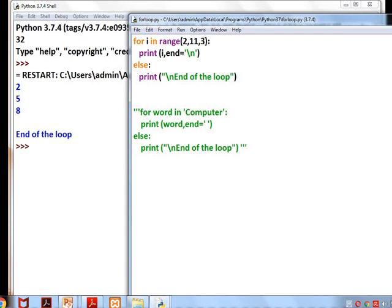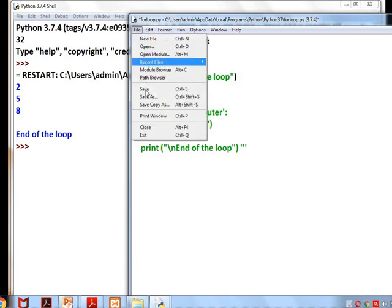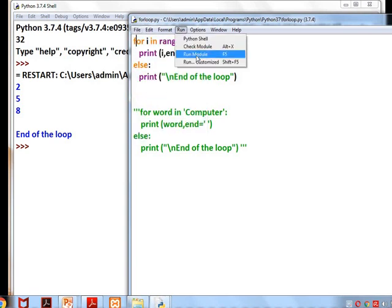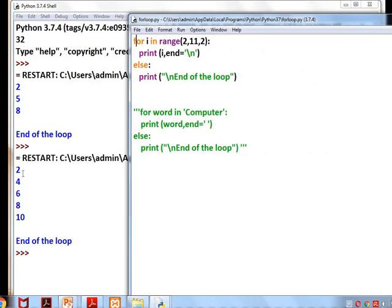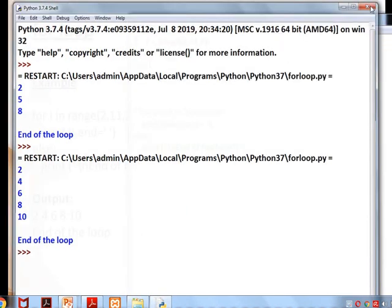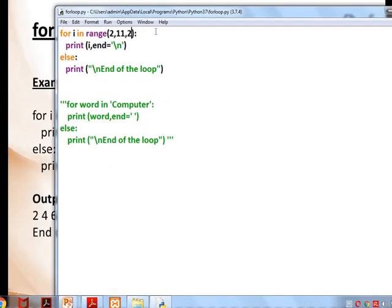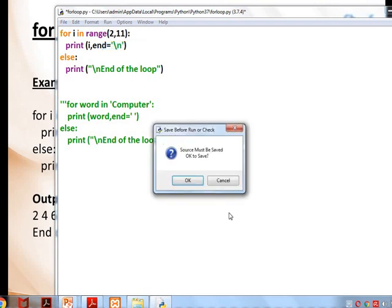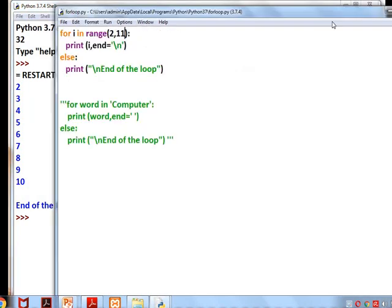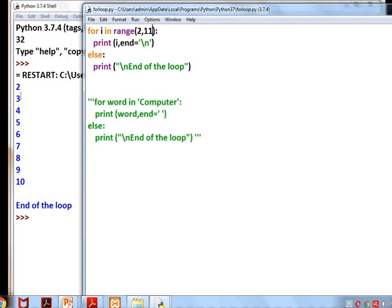So we'll change it to 2. Can you see here? 2, 2 plus 2 is 4, 4 plus 2 is 6, 6 plus 2 is 8, 8 plus 2 is 10. For example, if there is no third part, because the third parameter is optional, it will take default 1, that means it will take the increment as 1. It starts from 2 going to 10 because n minus 1 is 10. I hope you understood this.